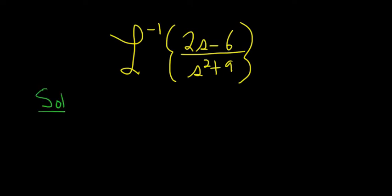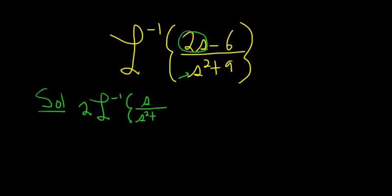We'll start by breaking this up. So this is the inverse Laplace of 2s over all of this, and I'll go ahead and pull the 2 out — so it's 2 times inverse Laplace of s over (s squared plus 9) — minus 6 times inverse Laplace of 1 over (s squared plus 9).